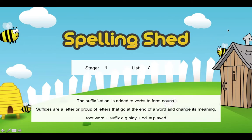Hi Year 4 and welcome back to your spelling lesson 3. Remember we're looking at the suffix '-ation' this week, and when we add it to verbs — action words in our sentence — it actually changes the function it has in our sentence and changes it to a noun, so a thing, an object.